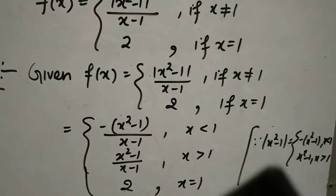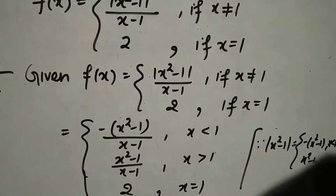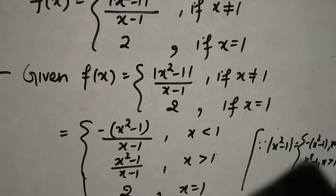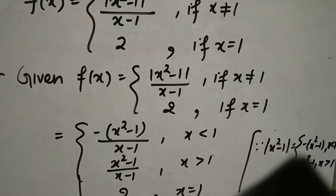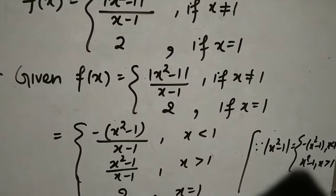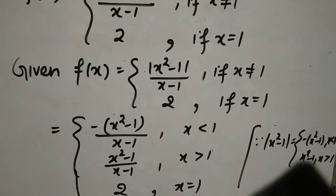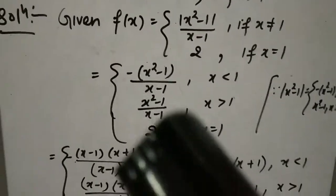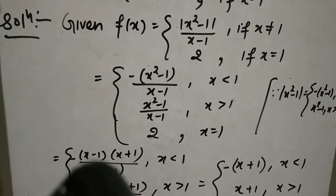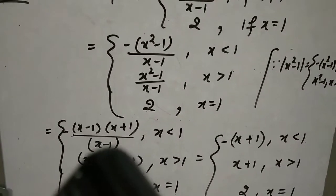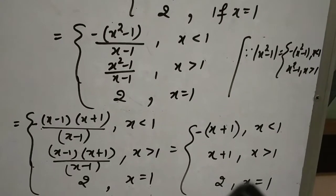जब x < 1 तो x² < 1, तो x²-1 negative होगा, mode से positive बनाने के लिए minus लगाया। x²-1 = (x-1)(x+1) formula लगाया। (x-1)(x+1)/(x-1) में x-1 cancel: बचा -(x+1) for x < 1, and (x+1) for x > 1। So simplified function: -(x+1) for x < 1; (x+1) for x > 1; 2 for x = 1।